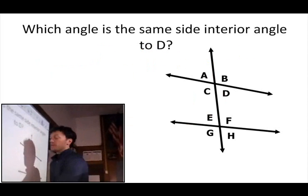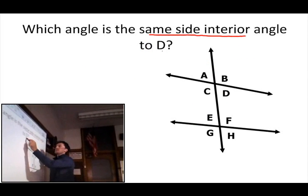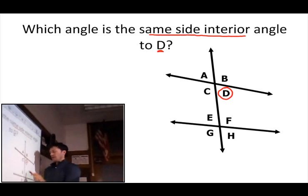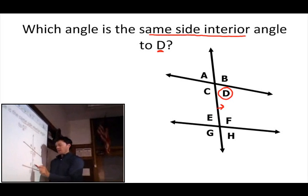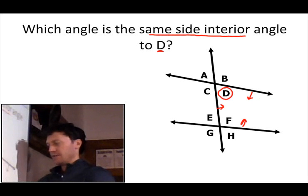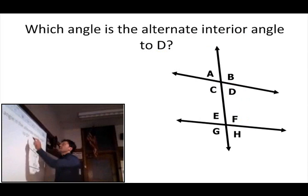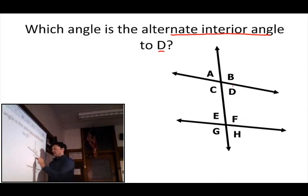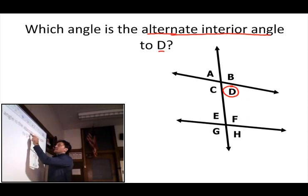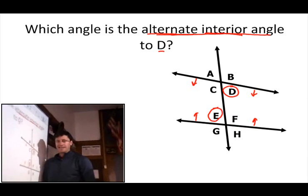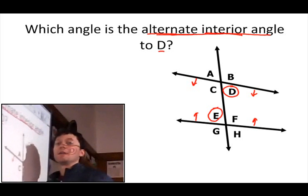Which angle is the same side interior angle to D? Same side of the transversal, interior of the lines being cut — that must be F. And the alternate interior angle to D? We want the interior of the two lines being cut but on the alternate side of the transversal — that must be E. So D and E are alternate interior angles.